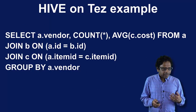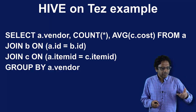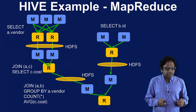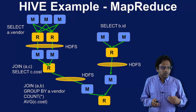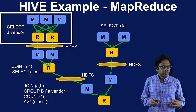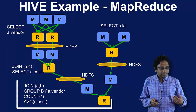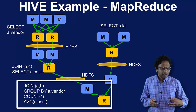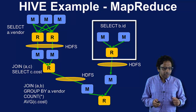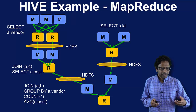Let's look at a simple Hive on TEZ example. We're doing a select from table A, joining from a second table B based on ID, then joining on C based on item ID, and then grouping things. Written in the original Hive MapReduce implementation, this would turn into a bunch of MapReduce jobs: one job for the select on vendor, one for the join of A and C selecting the cost, another join taking data from B and A, and a selection task from table B. You can see this ends up in many MapReduce jobs also writing to HDFS in all the intermediate steps — a clear illustration of the inefficiencies.